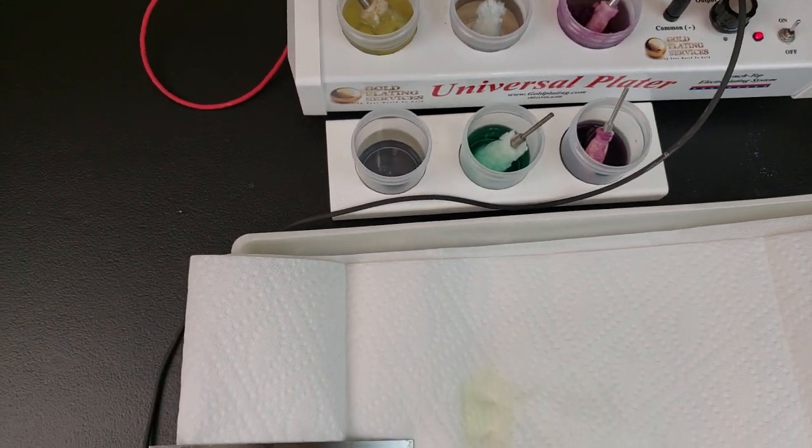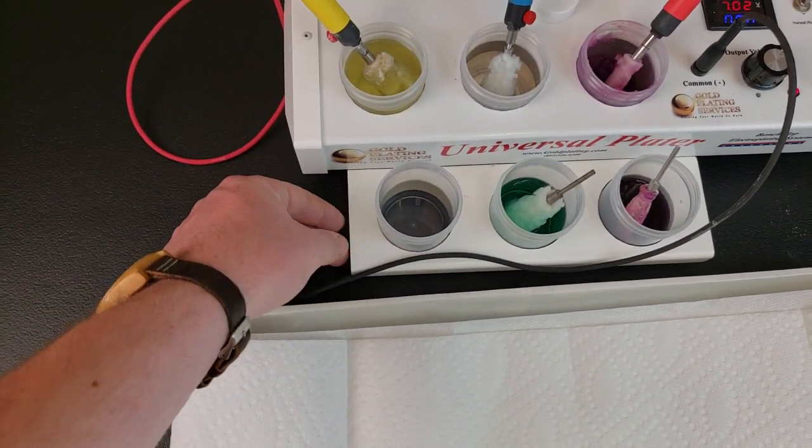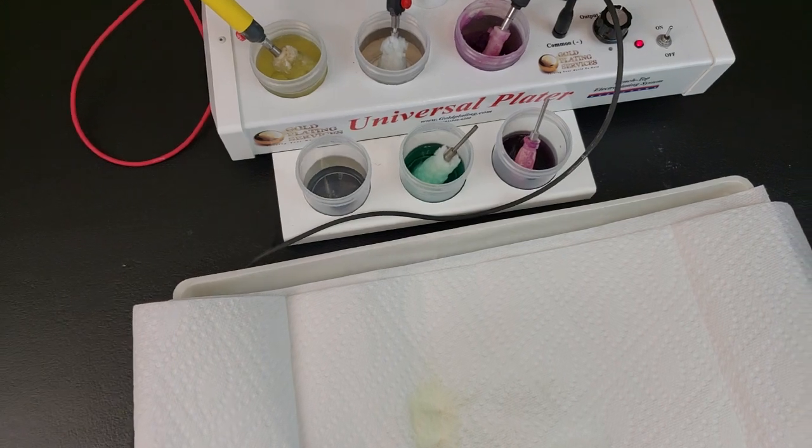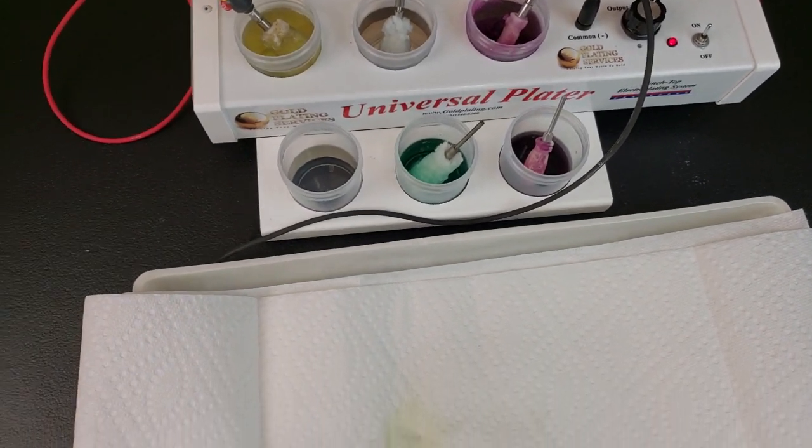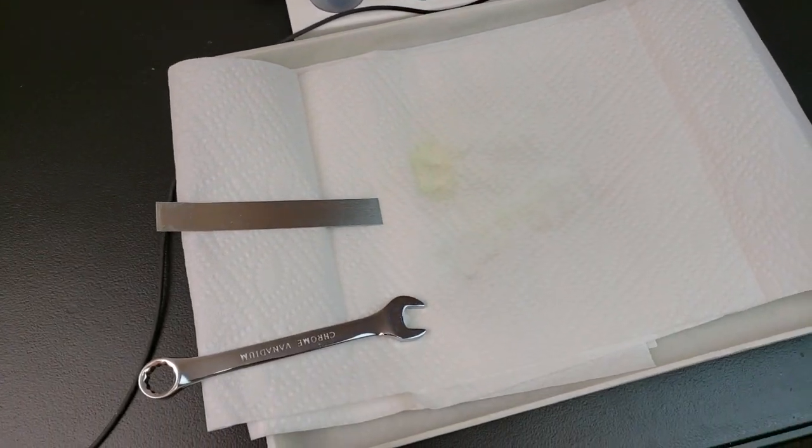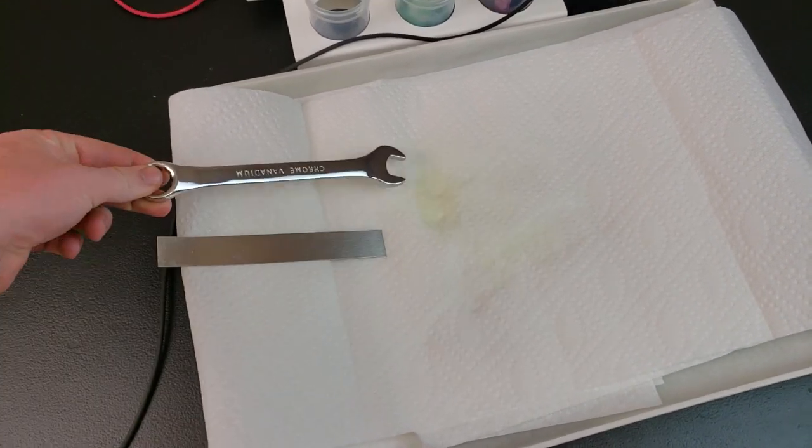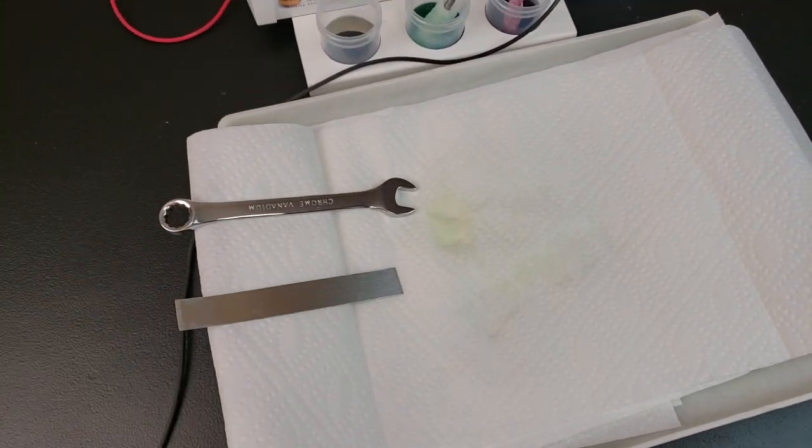So we pulled out one of our little beaker trays that we sell and put a few extra solutions in there. And Rob's going to show you how to tell the difference and then he'll plate a little bit onto the stainless steel for you.